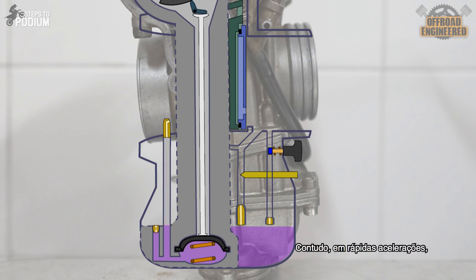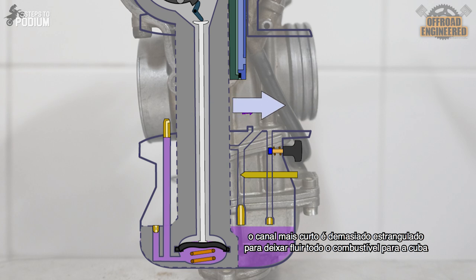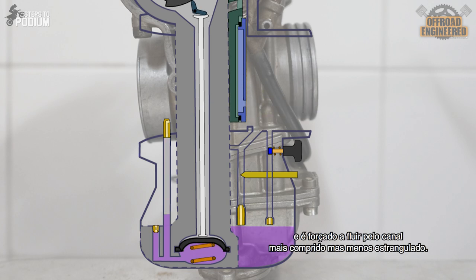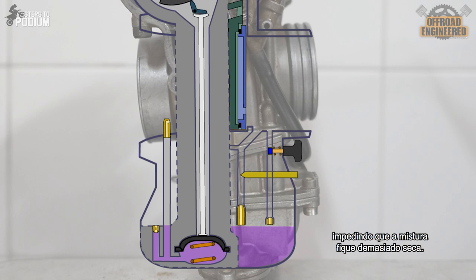However, on really quick accelerations, the shorter canal will be too restricted to let all the fuel reach the float bowl and will be forced to go up the longer and less restricted canal. This will squirt additional fuel into the inlet manifold, preventing the air fuel ratio from becoming too lean. This mechanism eliminates the so-called bogging, making it more suited for racing applications.